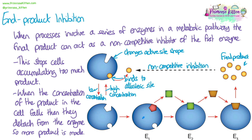With the inhibitor gone, enzyme one can catalyze the reaction with the first substrate, forming the green square. The green square is then the substrate for enzyme two, which catalyzes it into the plant pot shape. The plant pot shape is the substrate for enzyme three, which catalyzes the creation of the circle — the final product. Once the final product concentration gets too high in the cell, it acts again as a non-competitive inhibitor of enzyme one until the product is used up, and then the process can start again.